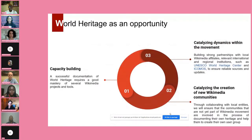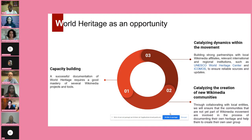We decided to create the Wiki World Heritage User Group. Our purpose was not only to document World Heritage, but to go beyond that and see World Heritage as an opportunity to empower Wikimedians and foster the Wikimedia movements in many countries, accomplished through three aspects: capacity building, catalyzing dynamics within the movement, and fostering partnerships.